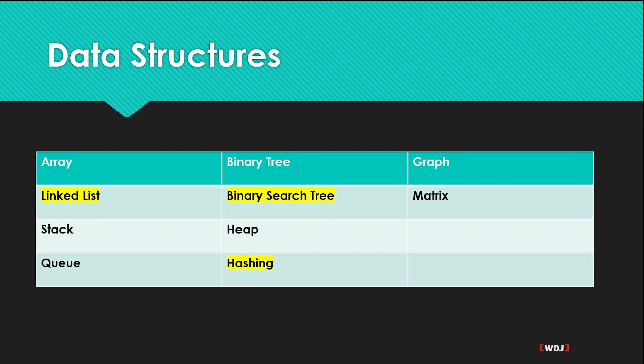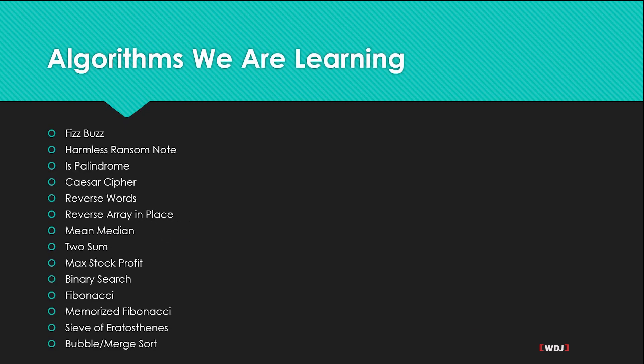And that's why I'm going to go over these. Now for the algorithms we're going to be learning, these are common for interviews as well. The fizz buzz, very popular or it used to be. Harmless ransom note, palindrome, Caesar cipher - these are all ones we're going to be doing. Especially the max stock profit - if you're applying for a bank or something to do with banks, with money, you might want to look into that one. That's going to be very helpful.